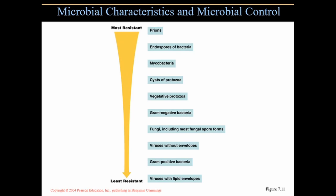This chart shows microbes from most resistant to least resistant. At the top, most resistant, is a prion — which isn't even a microbe at all. It's an infectious protein, and prion diseases are 100% lethal with no treatment and no cure. Disinfectants can do nothing against prions. They can even survive an autoclave — they don't denature, and so they remain infectious.